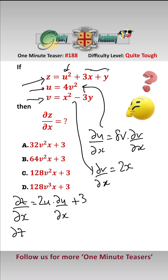All we need to do now is plug all of that in so dz/dx equals, well 2u is 2 times 4v squared because u is 4v squared. du/dx is 8v times dv/dx and dv/dx is 2x add 3.